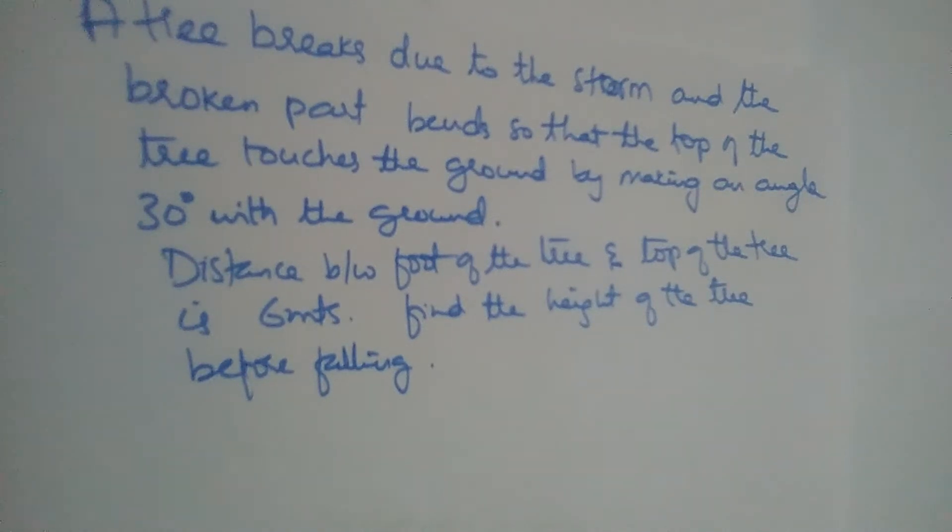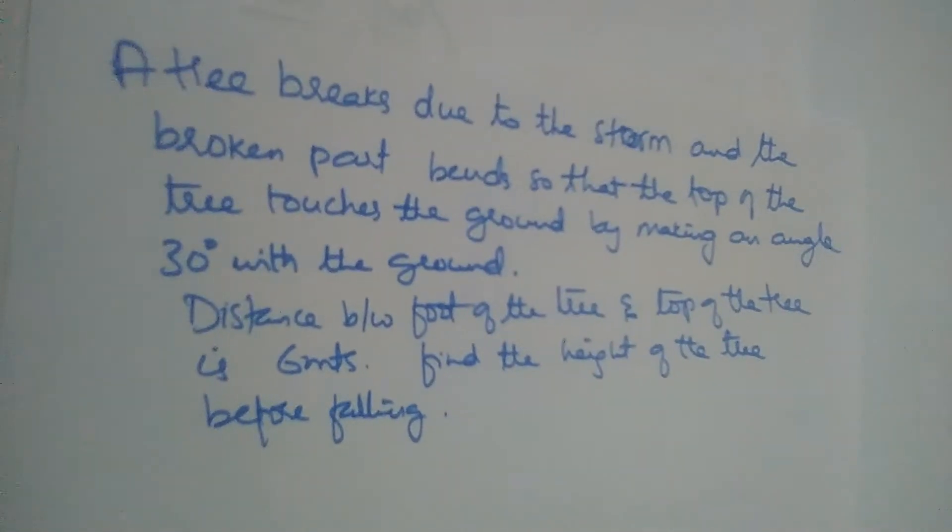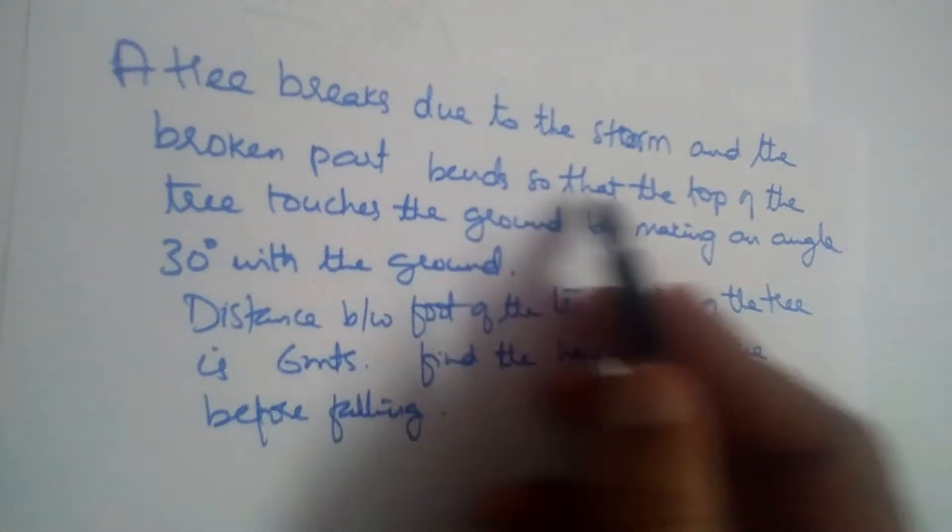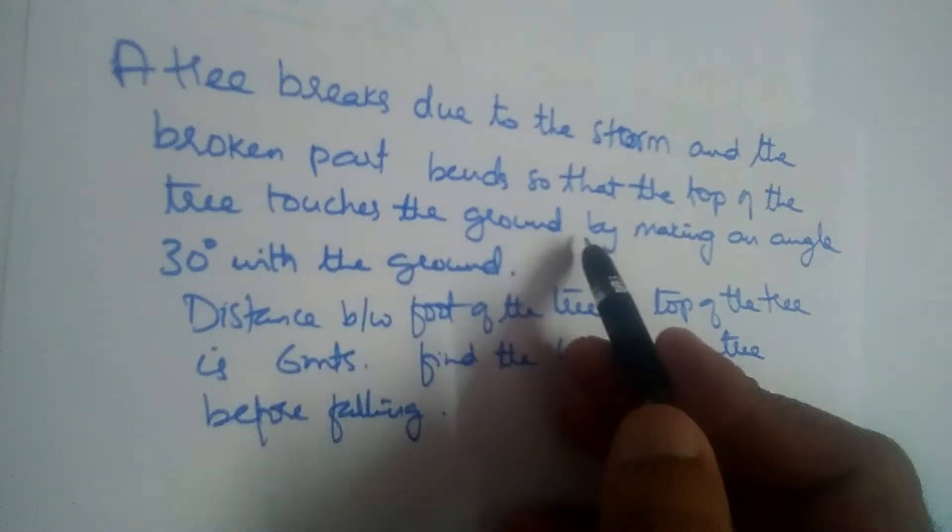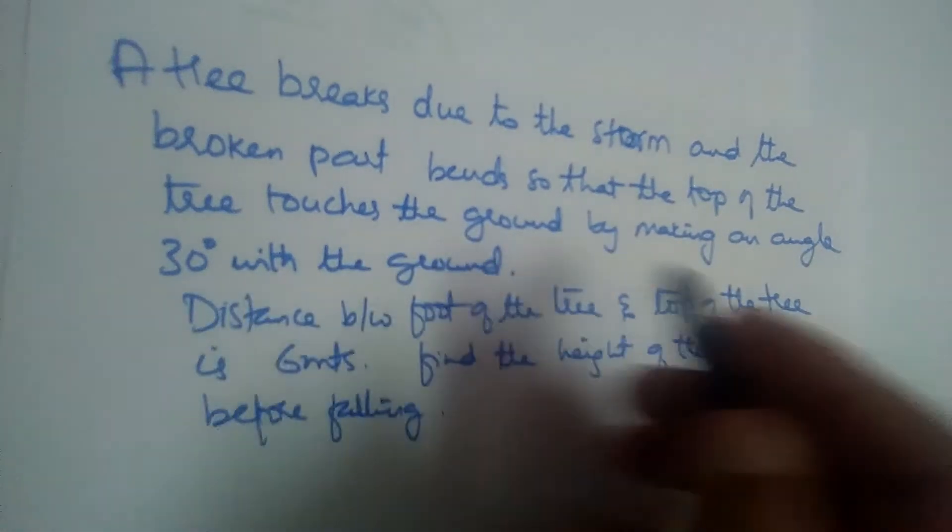Let us solve this problem. A tree breaks due to storm and the broken part bends so that the top of the tree touches the ground by making an angle 30 degrees with the ground.